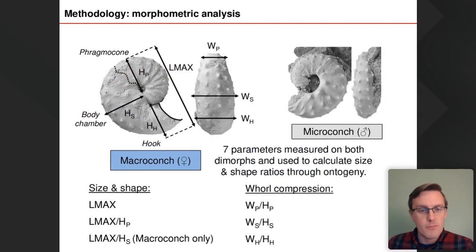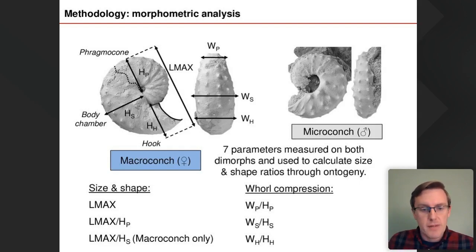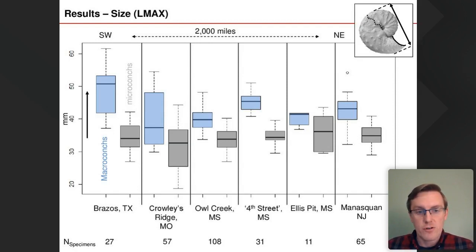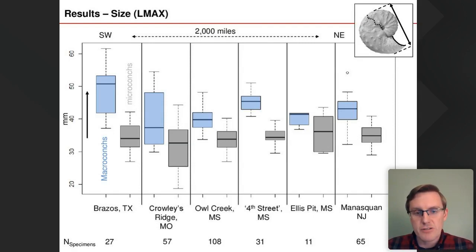We conducted a morphometric analysis on both dimorphs of *D. iris*. We measured seven parameters and used these to calculate size and shape ratios through ontogeny — looking at several stages of growth with respect to whorl compression measurements. For size (Lmax), there's a nice offset between the larger macroconchs and the smaller microconchs. Although there's some variance at each site — particularly in Texas — the mean values are pretty much the same across the entire range, and the boxes and whiskers all overlap. There's really not much geographic variation.